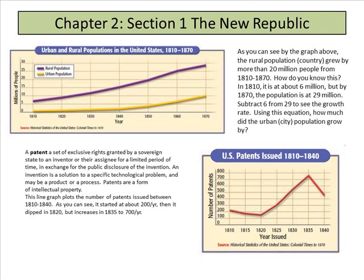As you can see by the graph, the rural population grew by more than 20 million people from 1810 to 1870. In 1810 it was about 6 million, but by 1870 the population was 29 million — subtract 6 from 29 to see the growth rate. Using this same equation, how much did the urban city population grow by? A little bit of math in your history class.